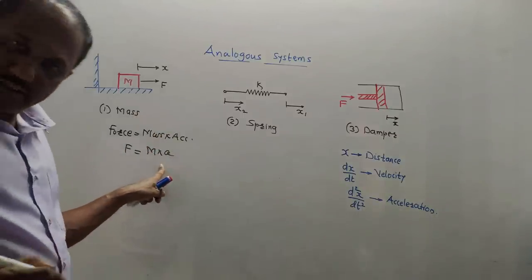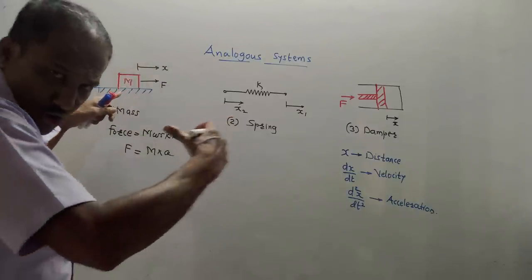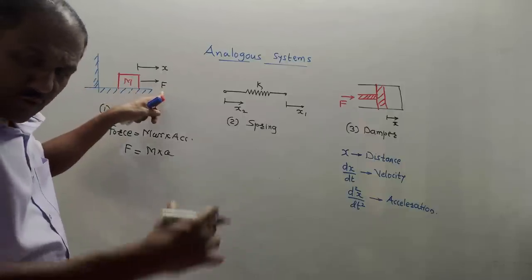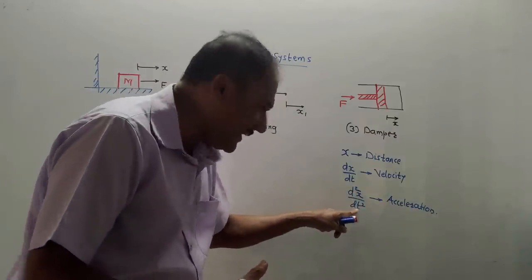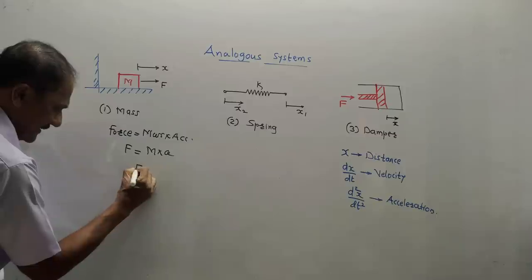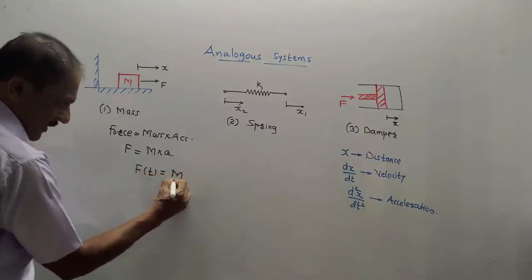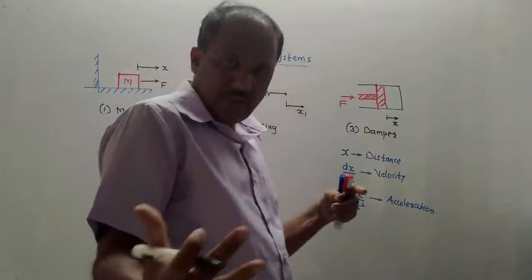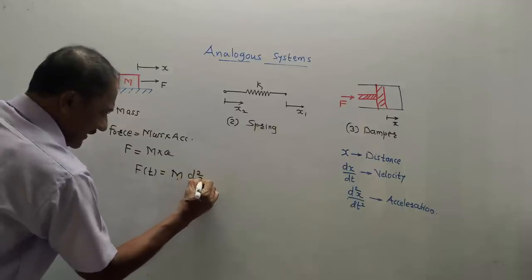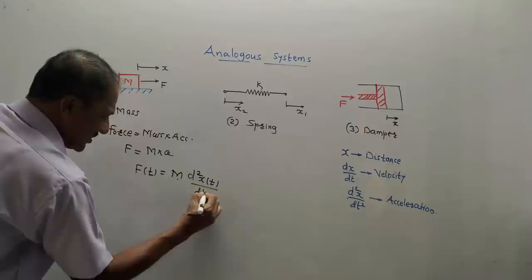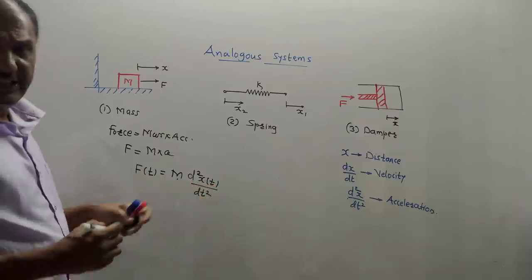M is mass, A is acceleration, F is force. In terms of distance, if you want to make a motion of a mass you need to apply a force which will cause motion by distance X. So acceleration is d²X/dt². The equation is F(t) = M × d²X(t)/dt², since displacement is a function of time.